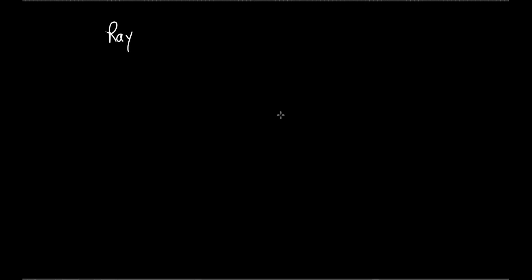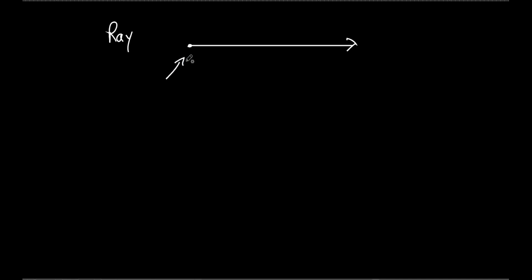Now we're going to talk about a ray. A ray has similarities to a line but one huge difference. A line kept on going infinitely in both directions, but a ray only goes forever in one direction. It has a starting point — a place on one end. There's no end in the other direction because it keeps going infinitely, but there is an end on one side, and we call that an endpoint.